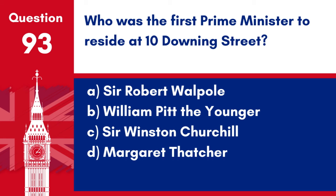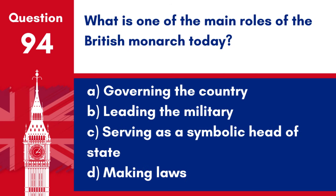Question 93. Who was the first Prime Minister to reside at 10 Downing Street? a. Sir Robert Walpole. b. William Pitt the Younger. c. Sir Winston Churchill. d. Margaret Thatcher. Answer: a. Sir Robert Walpole. Sir Robert Walpole is recognised as the first Prime Minister to reside at 10 Downing Street, making it the official residence of the British Prime Minister.